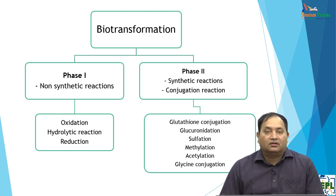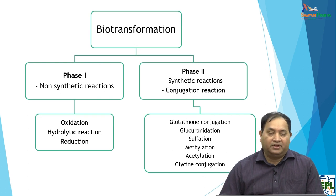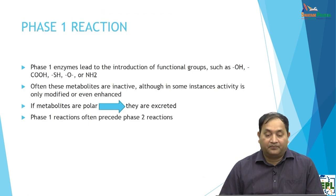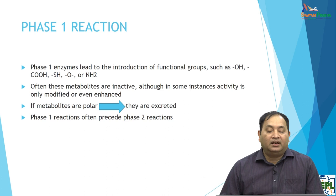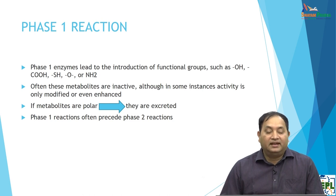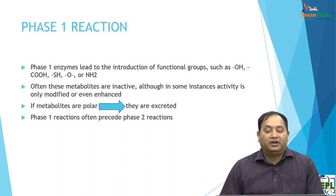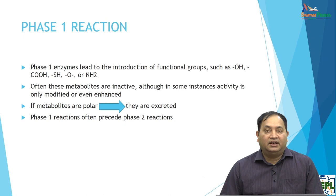Several conversions take place, including glucuronidation conjugation and glycine conjugation. Phase 1 is an enzymatic process that leads to the introduction of functional groups such as hydroxyl or carboxyl groups. Often these metabolites are inactive, or only slightly modified, or their activity may even be enhanced. If the metabolites are polar, they will escape the body. Phase 1 reaction products are often further processed in Phase 2 reactions.